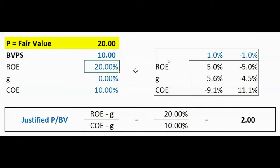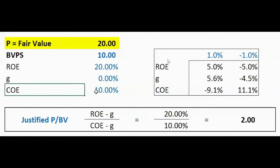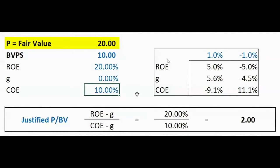An ROE of 20% means the bank makes a 20% return every year on its beginning book value. So if they start with 100, they make 20 dollars in net earnings throughout the year. We set the growth rate to zero — no growth — and assume a cost of equity of 10%. Now we have all the components for calculating the price-to-book multiple.